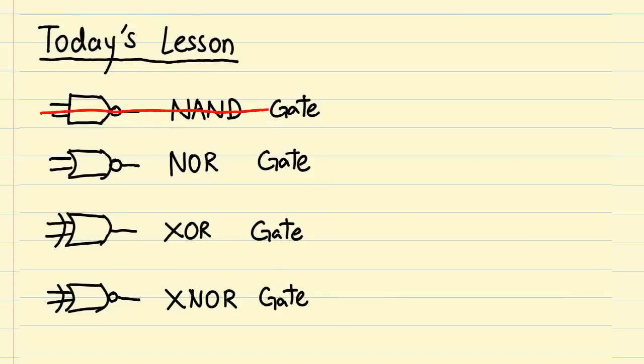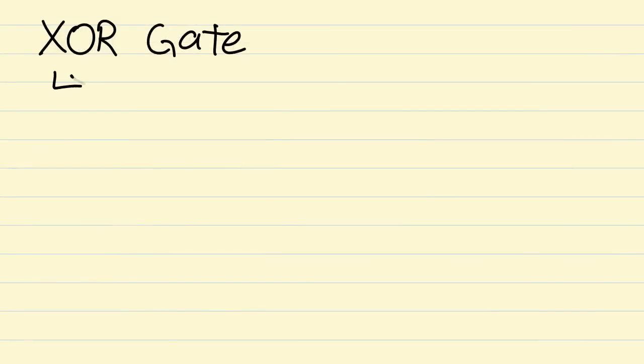So we've covered two of the four gates for today. Let's go on to look at the other two. These are called XOR and XNOR respectively. We'll look at XOR first. XOR stands for Exclusive OR. As you can tell, this is based off the OR gate.